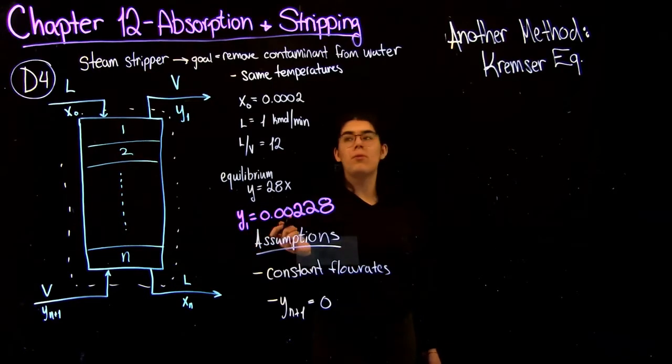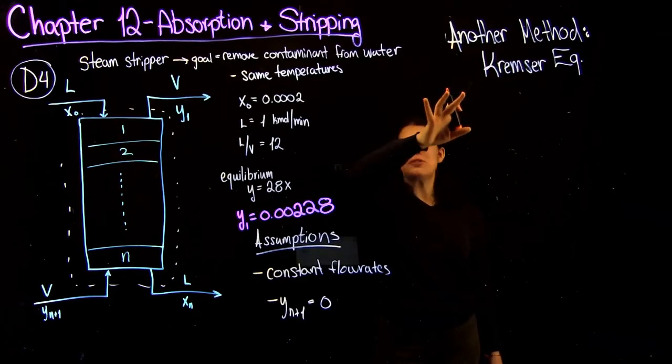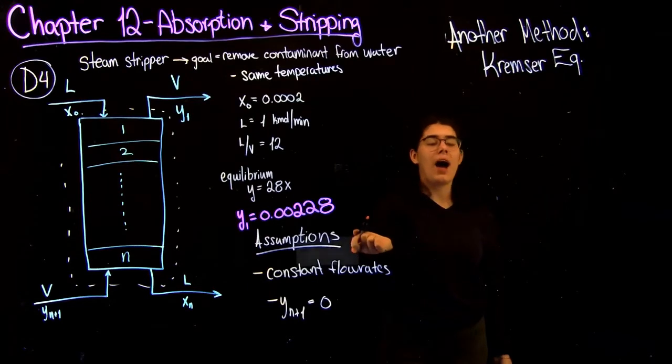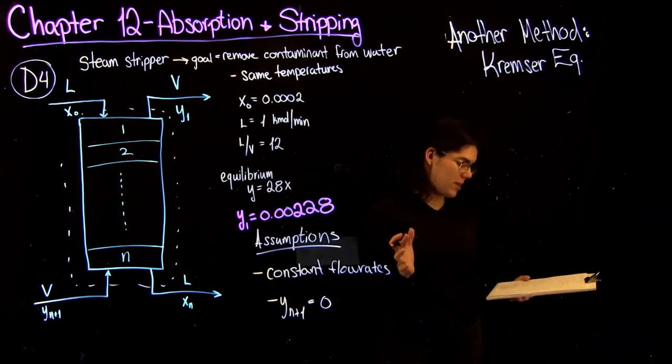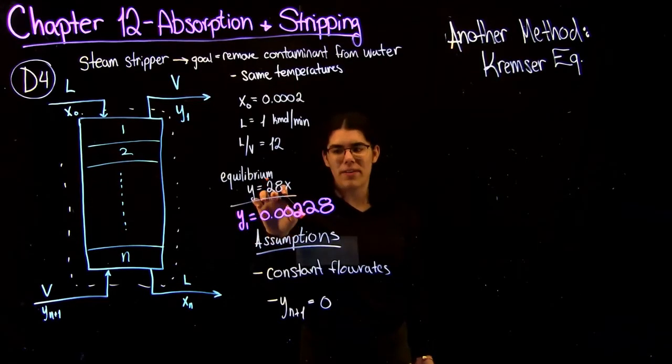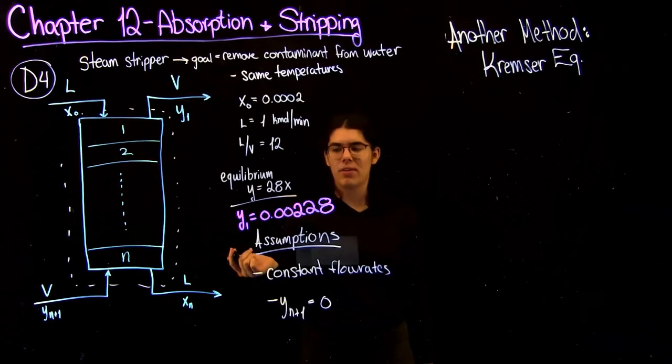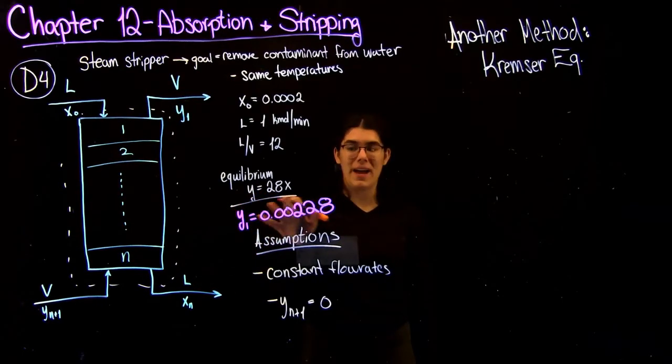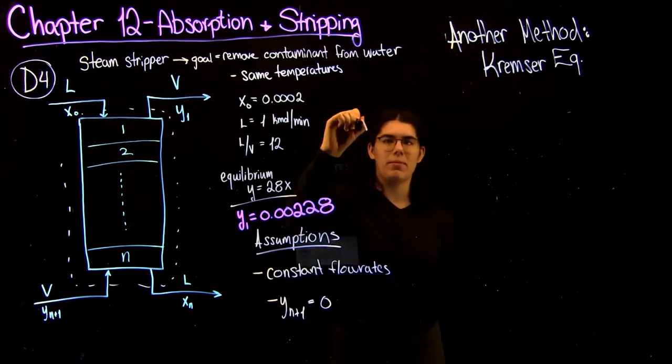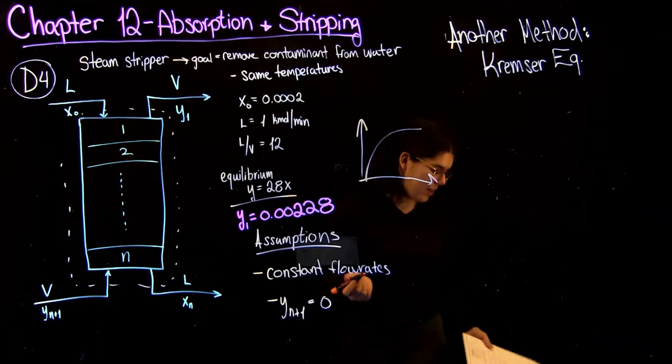Another way that you actually are able to solve a question like this is using the Kremser equation. I'm not going to show you the solution, but I will show you the equation and what a lot of things mean in it. One of the requirements for the Kremser equation is that you have to have a linear equilibrium slope, which we actually do have here. So you can really only use this in a system where the question tells you, hey, our equilibrium line has this equation with a slope. So you wouldn't be able to use it when your equilibrium line looks something like this, like it might for a distillation column.